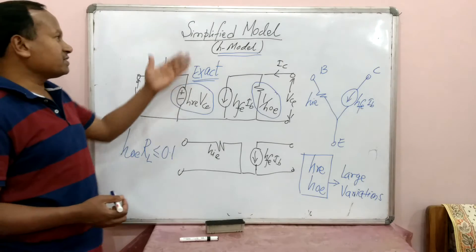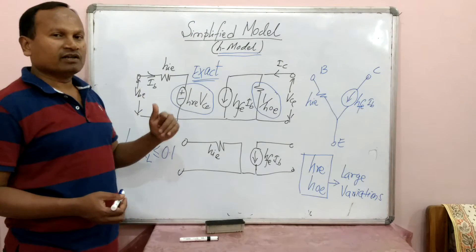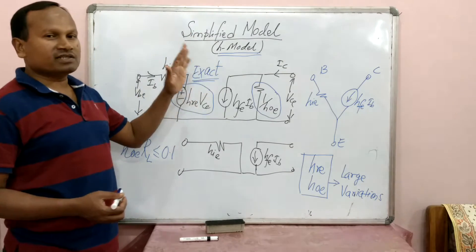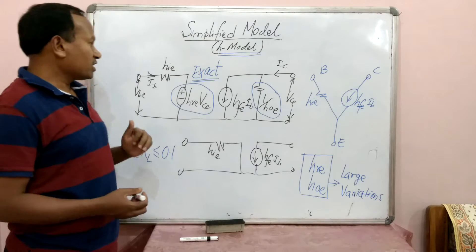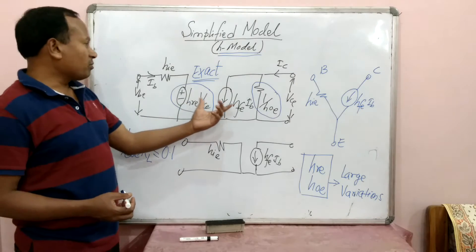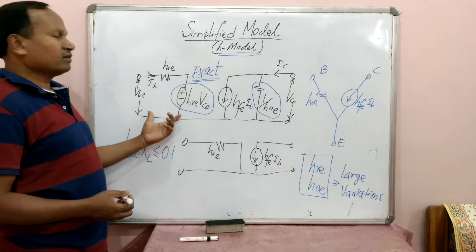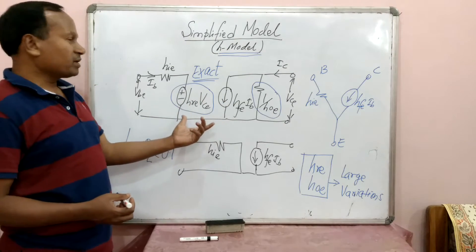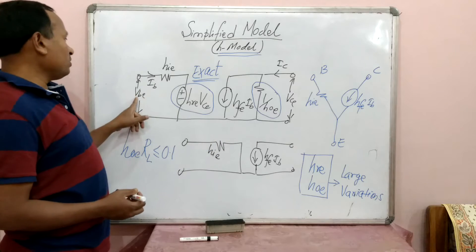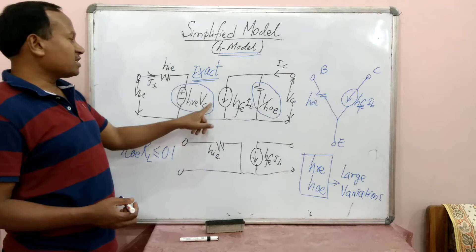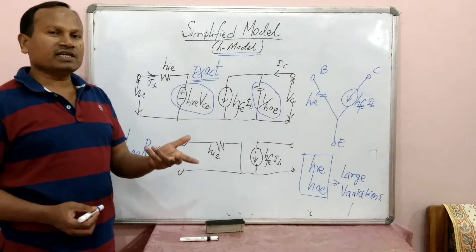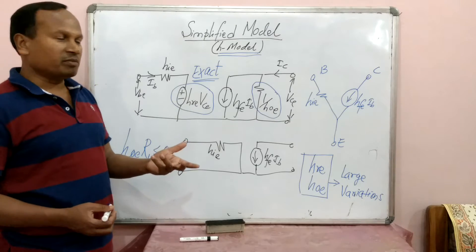We need to understand why it is significant, why it is important, and why there is a need for an approximate model. We have drawn a common emitter exact model — the common emitter exact model with parameters VB, IB, HIE, HRE, and VCE. How do we draw the exact model of a common emitter amplifier?